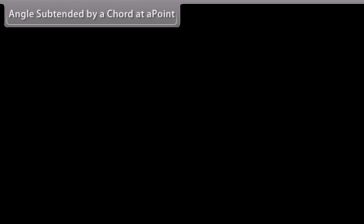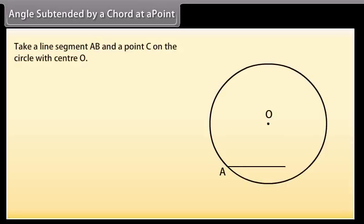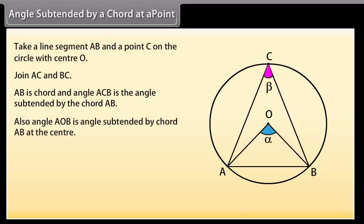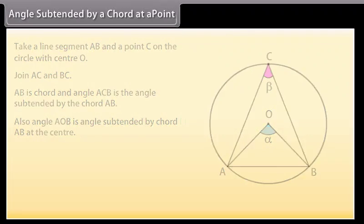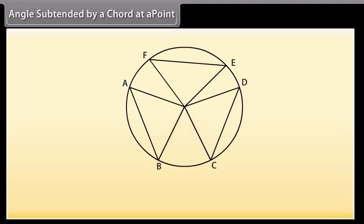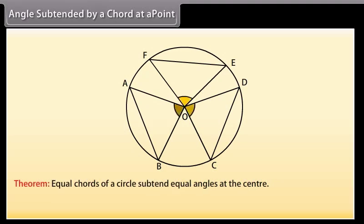Angle subtended by a chord at a point. Take a line segment AB and a point C on the circle with center O. Join AC and BC. Here AB is a chord, and angle ACB is the angle subtended by the chord AB at point C. Angle AOB is the angle subtended by chord AB at the center. If we draw two or more equal chords of a circle and measure the angles subtended by them at the center, we find that the angles subtended by them at the center are equal. This gives us the theorem: equal chords of a circle subtend equal angles at the center.